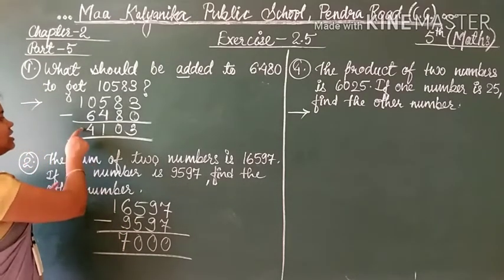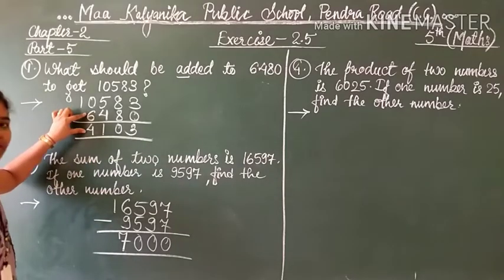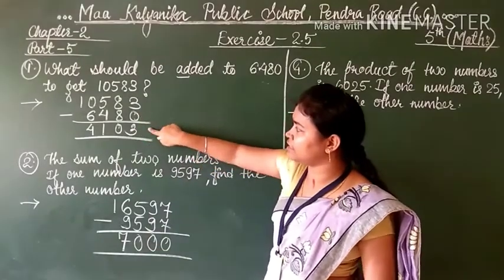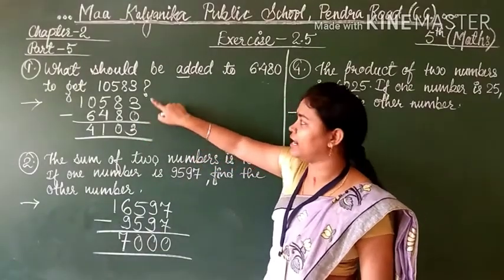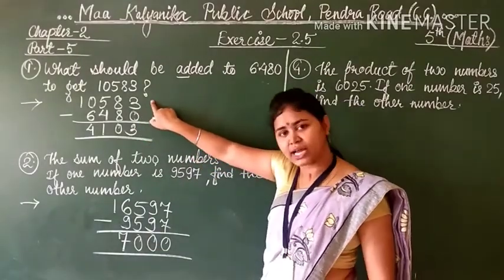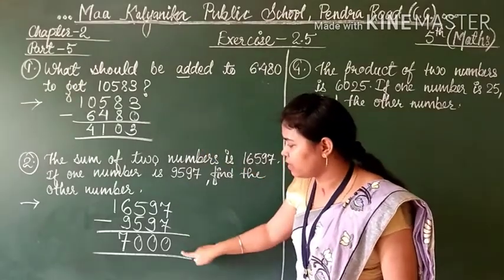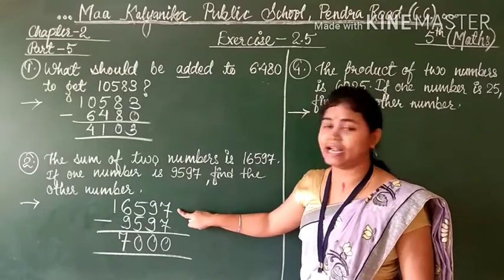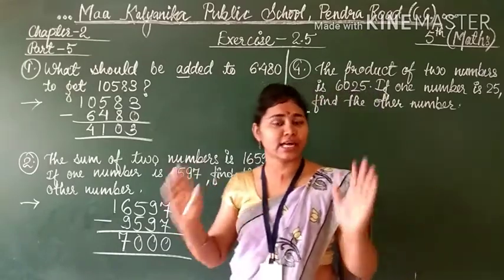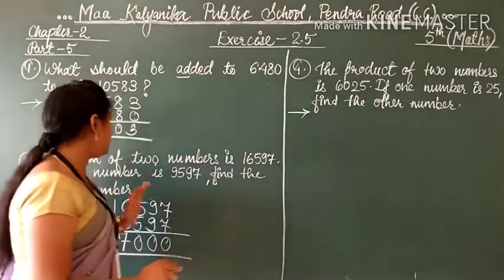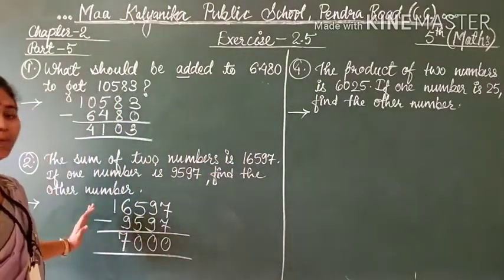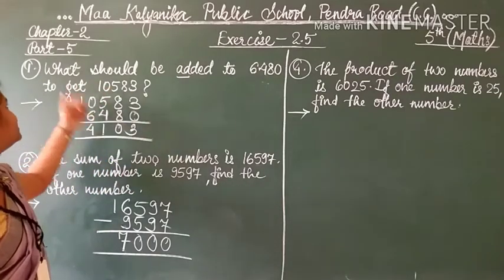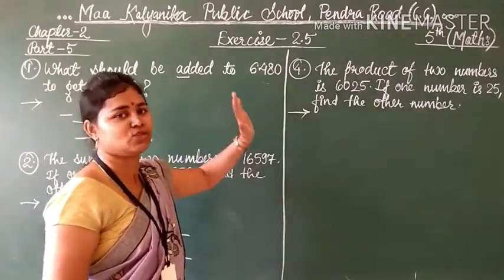You can check your answer too, students. In question number 1 also, if you add the answer and the smaller number, you will get the original total. So in the same way, add these 2 numbers and you will get the given sum. If you get that answer, your solution is correct. Question number 3 is the same as question number 1 — only the numbers are changed.